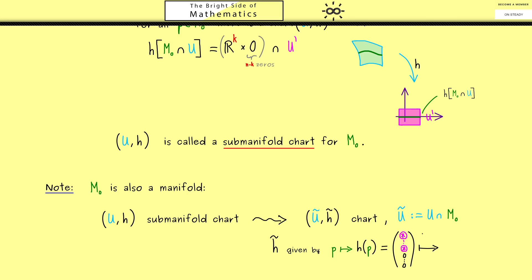So in other words, this is now simply a projection map, and the outcome is an element of R^k. So you see, this is very nice: h tilde maps this set into R^k. Okay, and in summary, because we have enough submanifold charts, we also have enough ordinary charts. In other words, M_0 is a well-defined manifold.